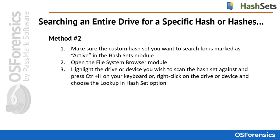Here is another method to scan an entire disk or device that has been added to the case with just a few clicks of the mouse. In this method, simply make sure the custom hash set you want to search for is marked as active in the hash sets module. Then open the file system browser module and highlight the drive or device you wish to scan the hash set against, and press Ctrl+H on your keyboard, or simply right-click on the drive or device and choose the Look Up in Hash Set option.